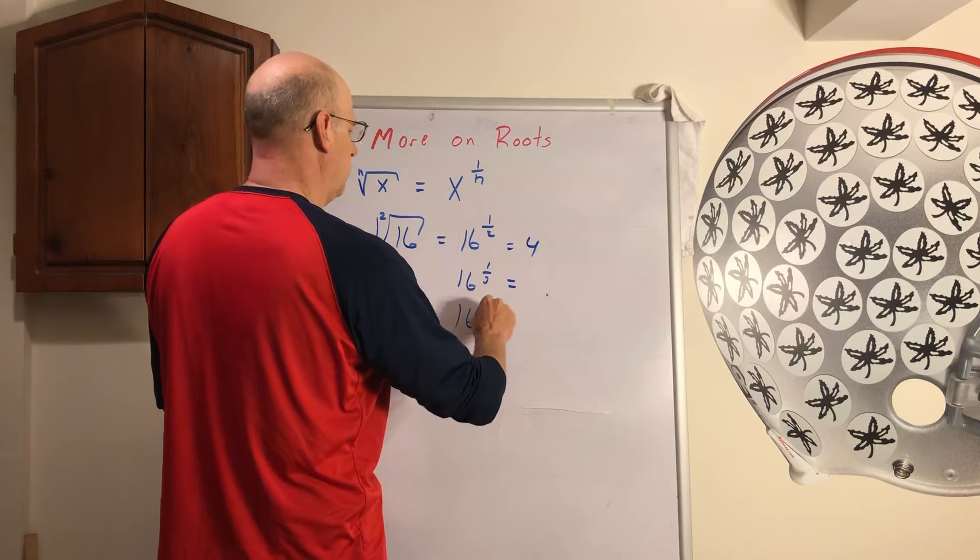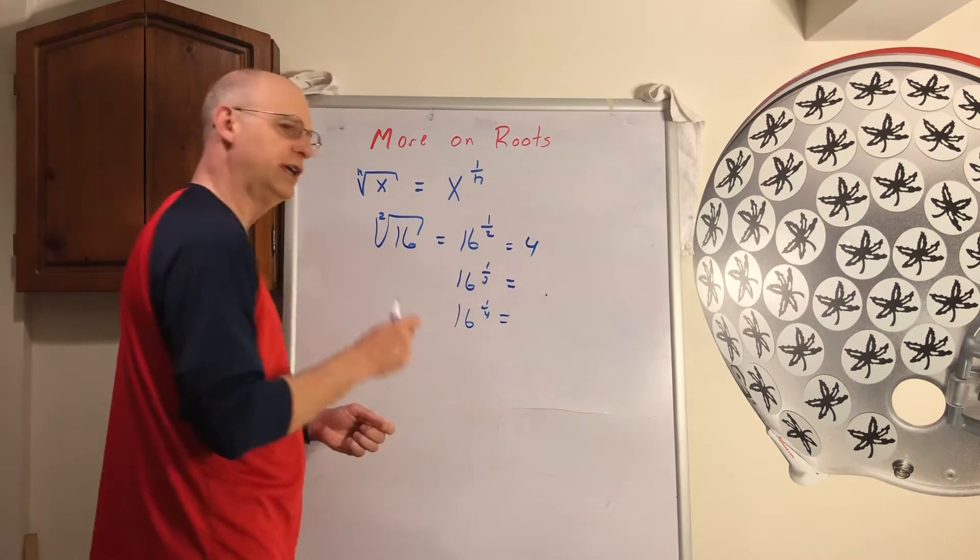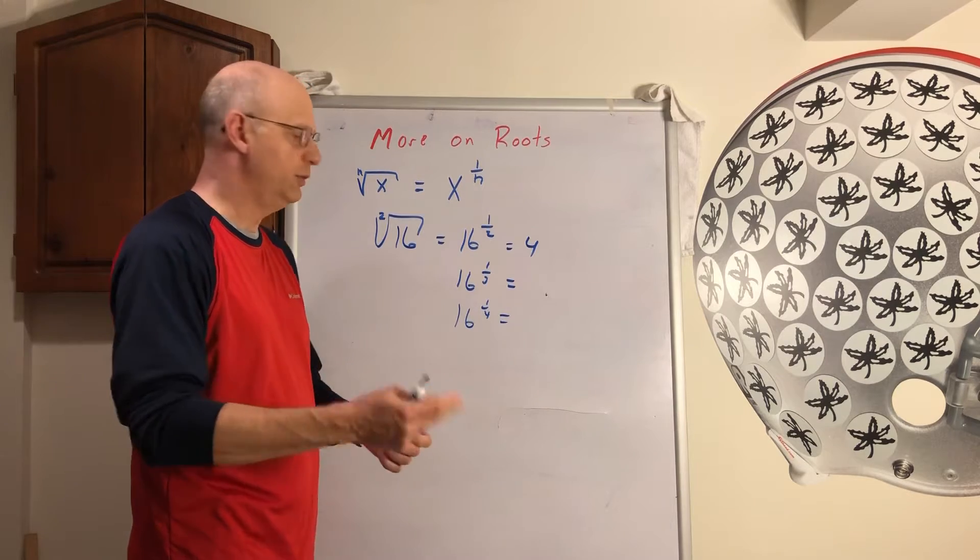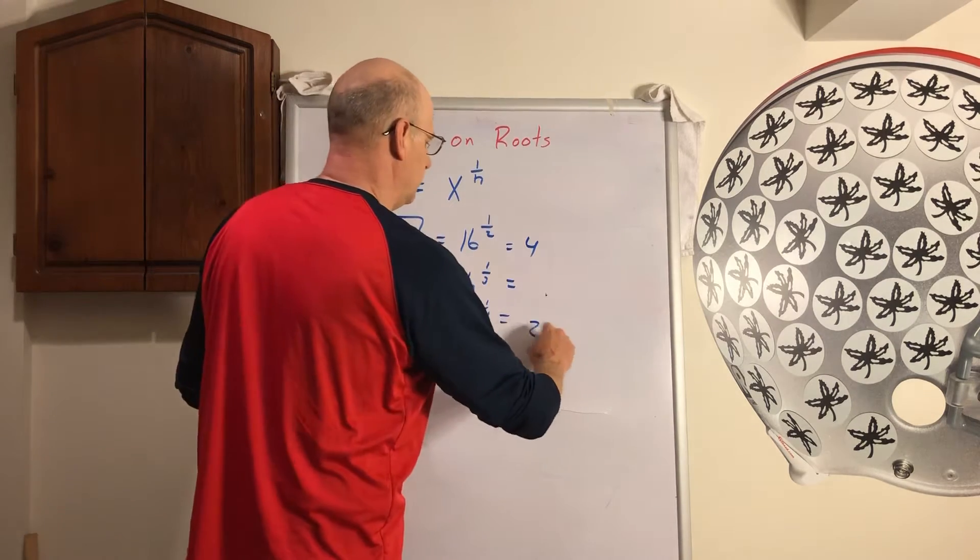What about if it's 16 to the 1 fourth? Well if I take 2 times 2 is 4, times 2 is 8, times 2 is 16. Well it's really a 2.